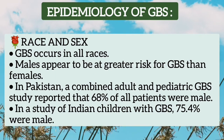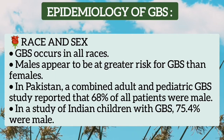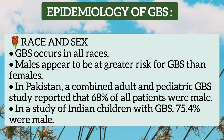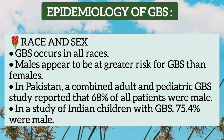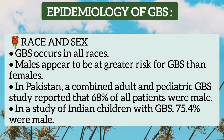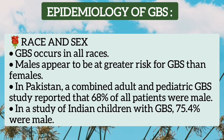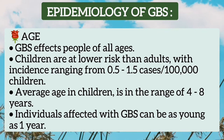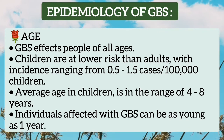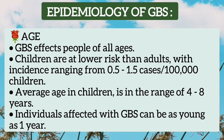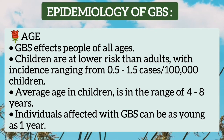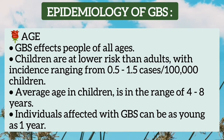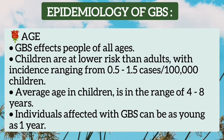GBS occurs in all races, and males are predominantly affected. In Pakistan, a combined adult and pediatric GBS study reported that 68% of all patients were male. In a study of Indian children, 75.4% were male. GBS affects people of all ages; however, children are at lower risk than adults. The incidence in children is about 0.5 to 1.5 cases per 100,000 children. The average age in children is about 4 to 8 years, but children as young as 1 year have been affected.